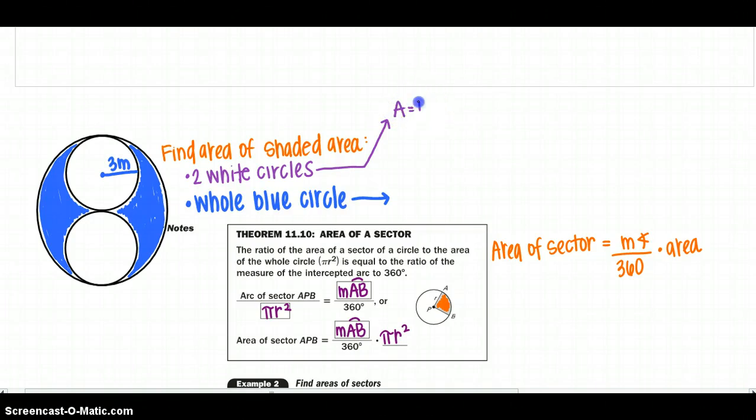Area equals pi r squared. I know my radius is 3, so I'm going to say my area equals pi times 3 squared. So my area of one circle would be approximately 28.27, and I have two of those, so I'm going to times it by 2. So I would get 56.55 meters squared for both of my unshaded.